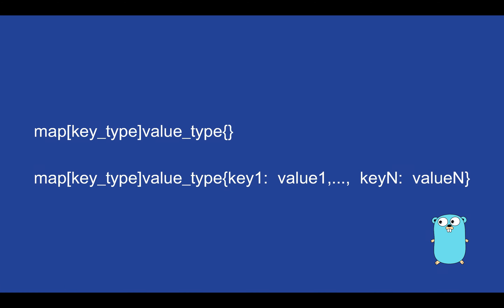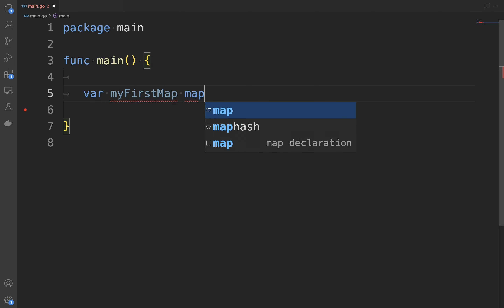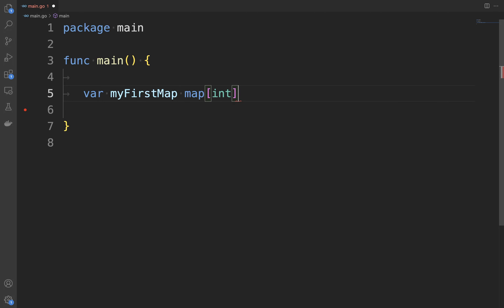Let's start with the simple way, without the make function. The syntax is: map, open and close brackets, the key type and then the value type. Let's write a real example of a map with integer keys and string values: var myFirstMap, the type of the key is integer and the type of the value is string. I have not added any key-value pair yet inside the map.